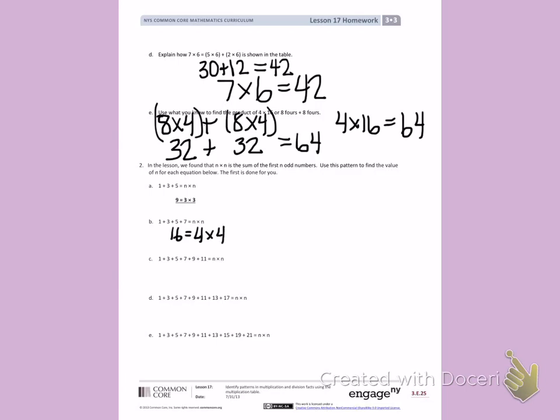Letter C. I already know 1 plus 3 plus 5 plus 7 from letter B equals 16. I can add 9 more. 16, 17, 18, 19, 20, 21, 22, 23, 24, 25, plus 11 more will give me 36.